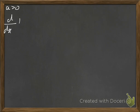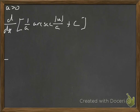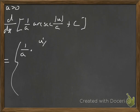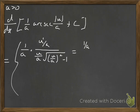A is greater than 0. We're going to take the derivative of 1 over A times arc secant of the absolute value of U over A plus a constant of integration. There are two cases depending on whether U is positive or negative, but it ends up not mattering — we get the same thing. We get 1 over A times U prime over A, divided by (U over A) times the square root of (U over A) squared minus 1. Since U is positive in this case, we can drop the absolute value bars.